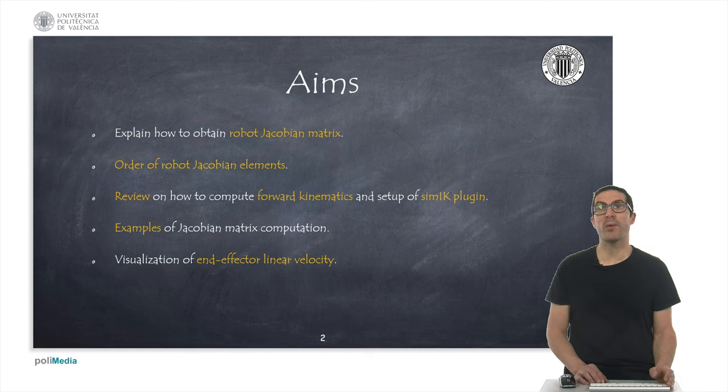To finish the presentation, I will show some numerical examples of the Jacobian matrix computation for a 7 degrees of freedom robot in two specific configurations. We will also see an example in which we will visualize the direction of the instantaneous linear velocity vector at the end effector as a consequence of applying a velocity to the joints.